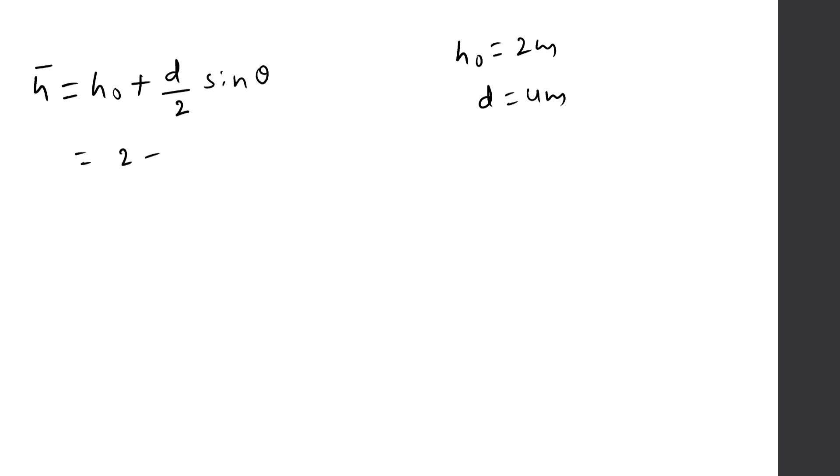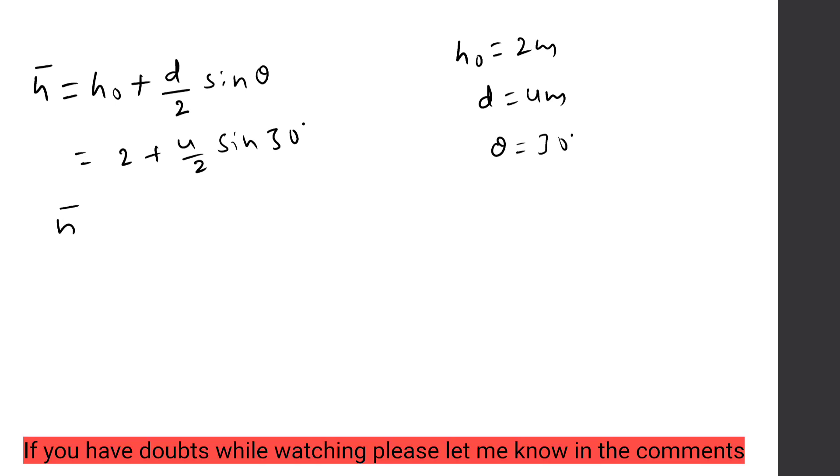After substituting: 2 plus 4/2 sin θ, where θ is 30 degrees, that is the angle of inclination. After solving, we will get h̄ equals 3 meters.